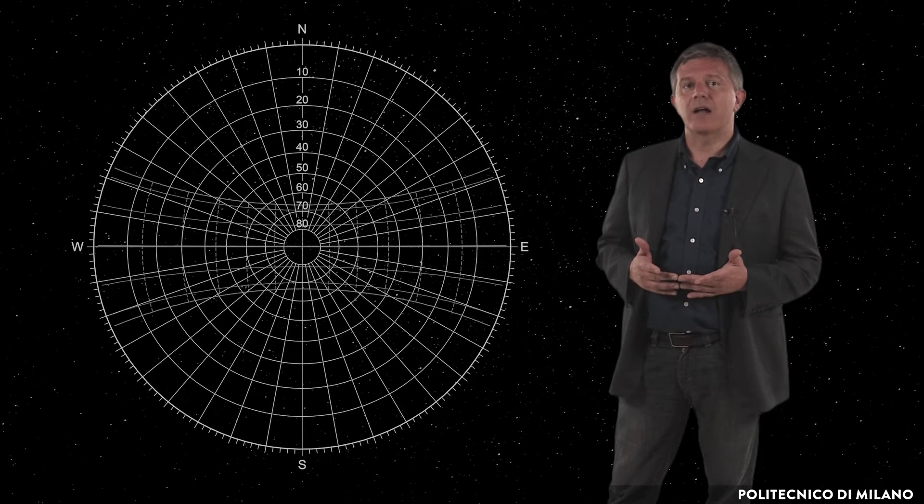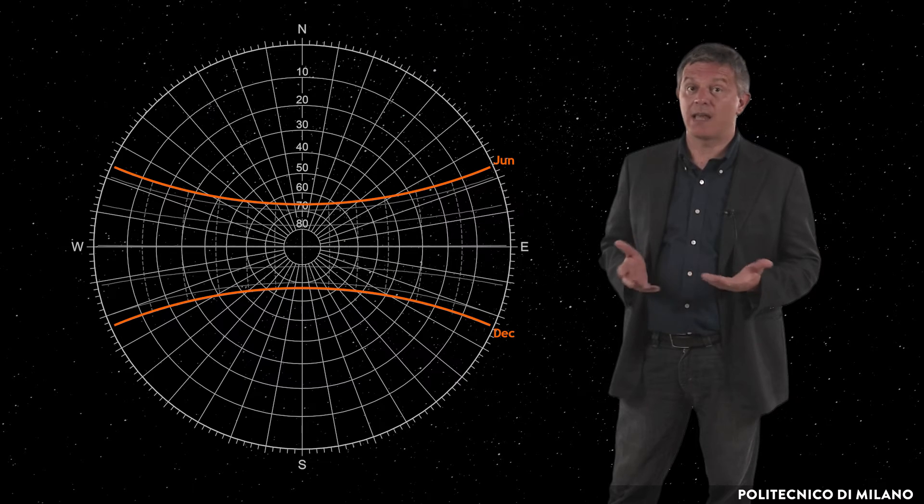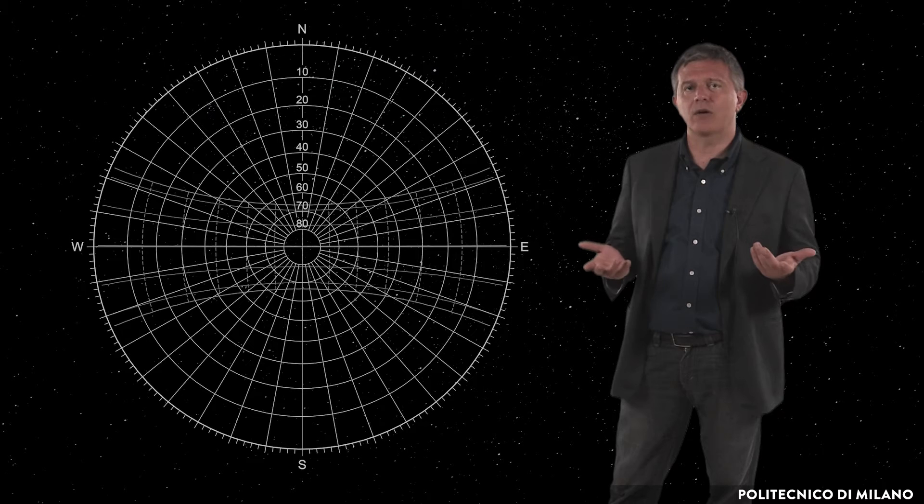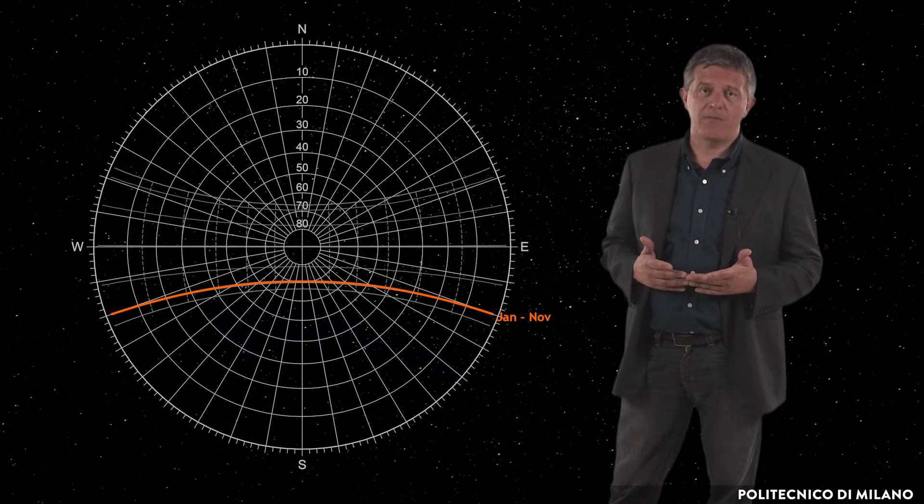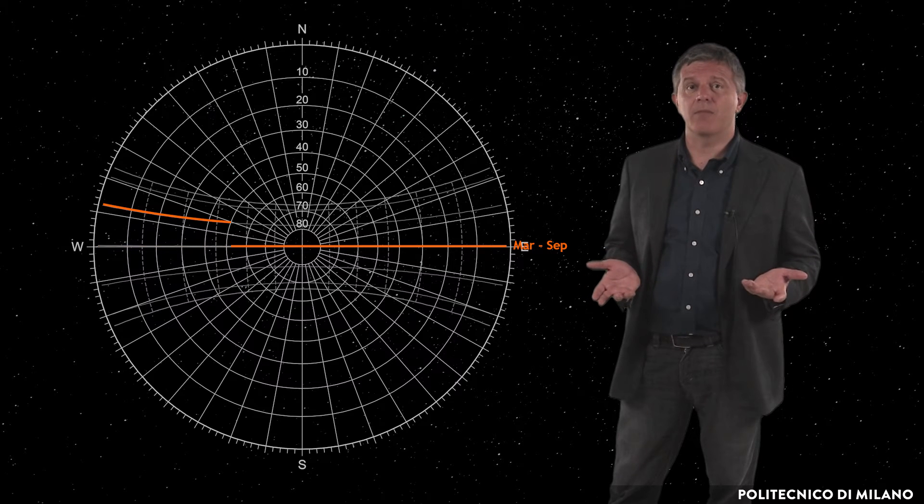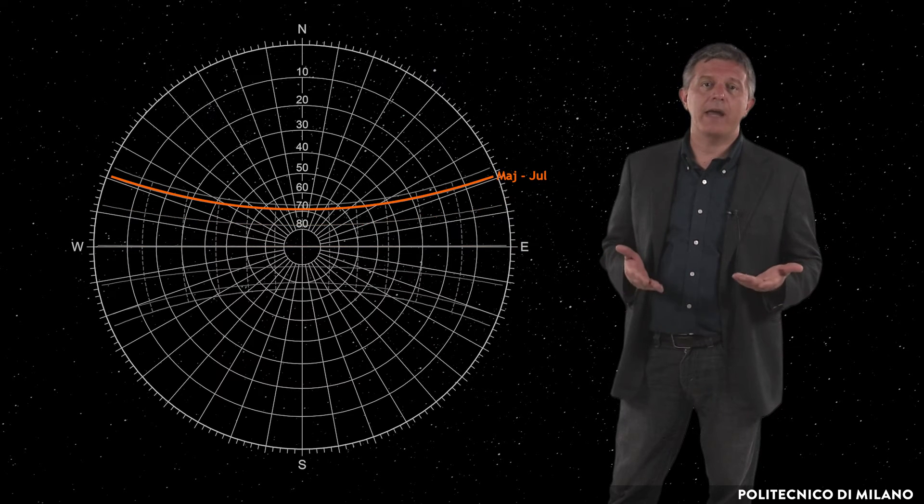In the polar diagram is drawn the average paths of the Sun in the solstice months, December and June, and five pairs of symmetrical months in which the plots are practically coincident. January and November, February and October, equinoxes of March and September, April and August, May and July.